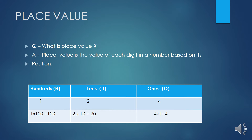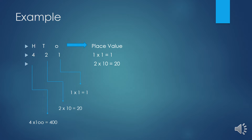Same, one hundred position pe hai, to one multiply by hundred is equal to one hundred. Agar digit change ho to according to position uski value bhi change ho jayegi. For example, here — four hundred twenty one.